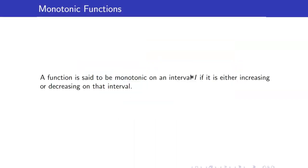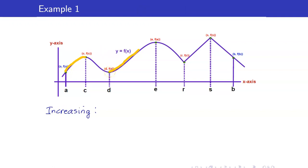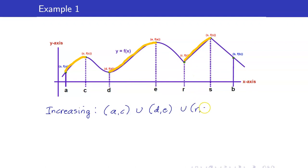A function is said to be monotonic on an interval if it is either increasing or decreasing on that interval. Suppose that we have this graph of f(x). Let us determine the intervals for which the graph is increasing. It is increasing on the intervals AC union DE. You're just looking at the x-coordinates, and this one here is the interval RS.